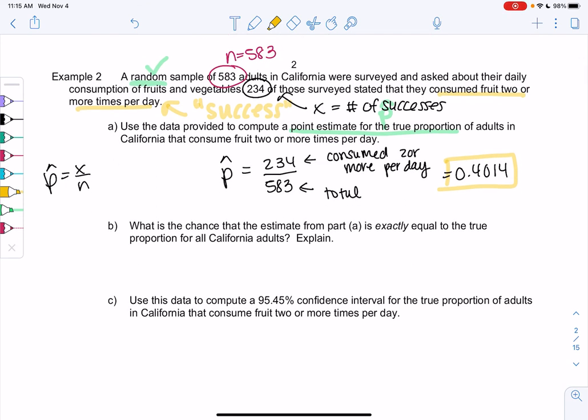What is the chance that the estimate from part a is exactly equal to the true proportion of all California adults? Exact is a really strong word. It's highly unlikely that we're exactly 40.14%. So basically zero, unlikely to be exact, but should be close. And why is it not exact? That's due to sampling error in case we need that reminder.